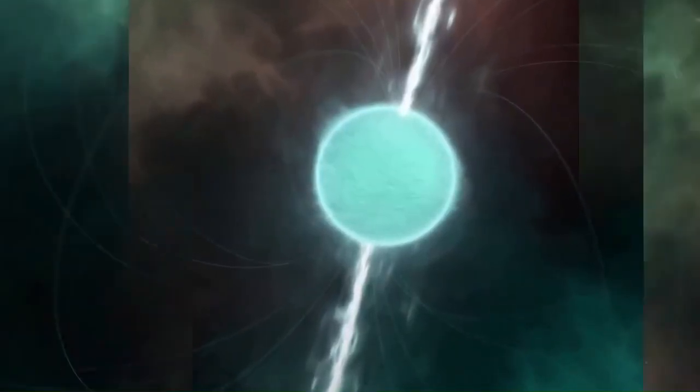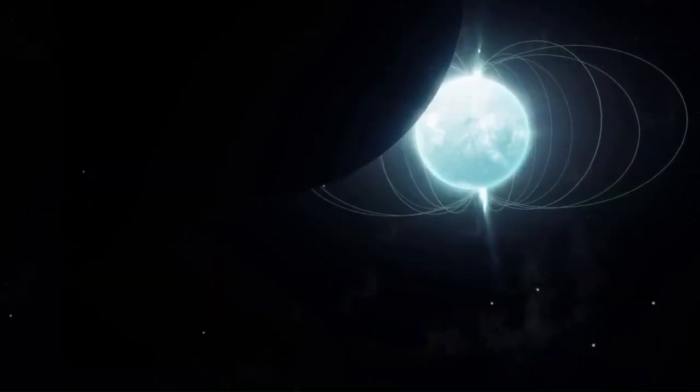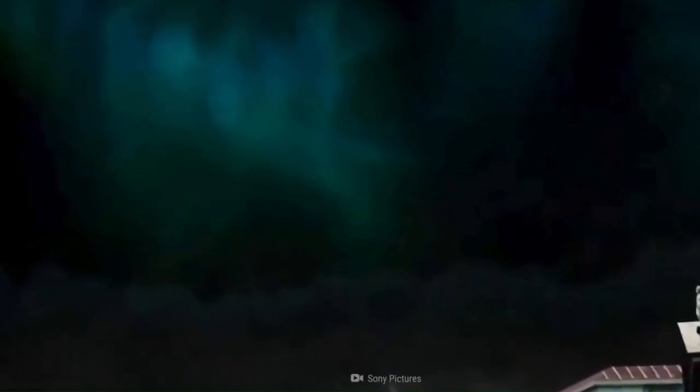Depending on the trajectory of the magnetar, as well as the size and mass of both the magnetar and the black hole, the magnetic monster would be eaten up either whole, or slowly, piece by piece.